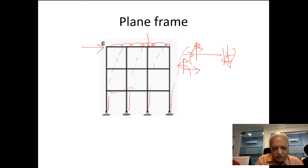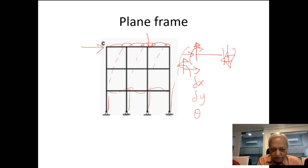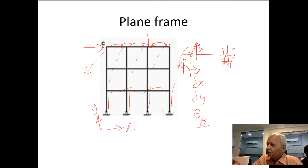For a plane frame, there will be only three displacements at each joint: delta x, delta y, and rotation about an axis perpendicular to the plane of the structure. If the structure lies in the x-y plane, the rotation is about the z-axis.